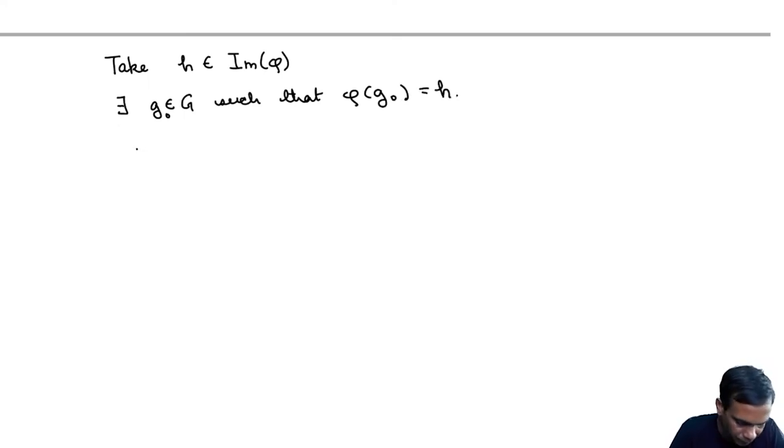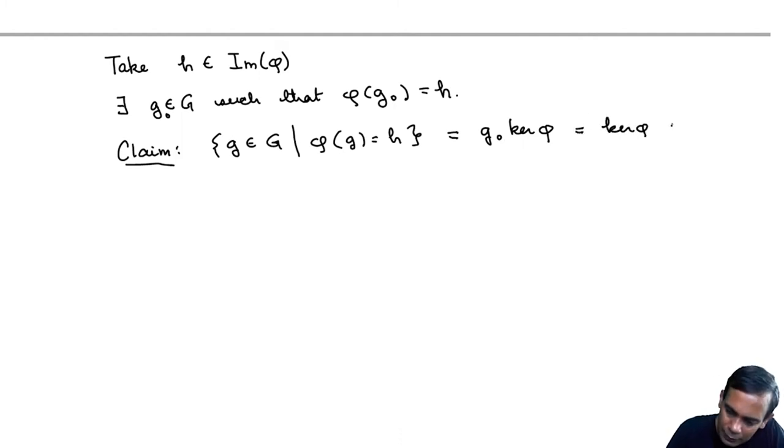Now question is what are the elements that map to H? We claim the set of elements G in G such that phi of G is equal to H is equal to G0 times kernel phi. The left coset of the subgroup kernel phi corresponding to G0, and it's also equal to kernel phi times G0, this right coset of kernel phi corresponding to G0.